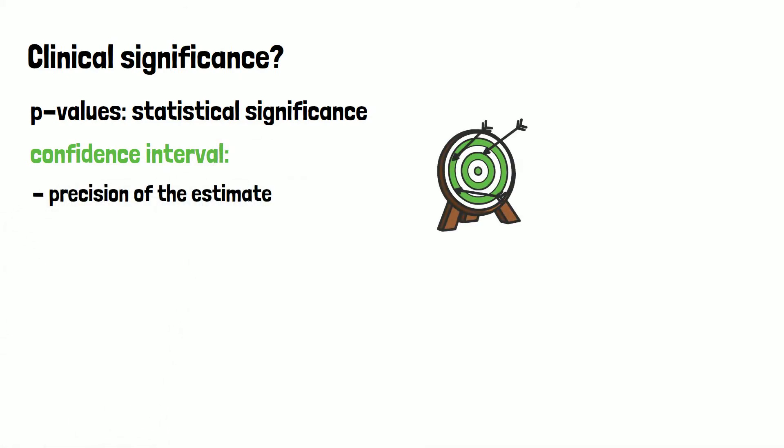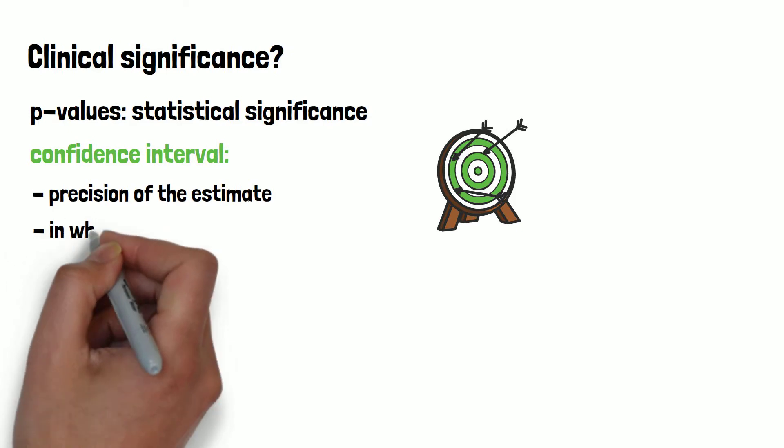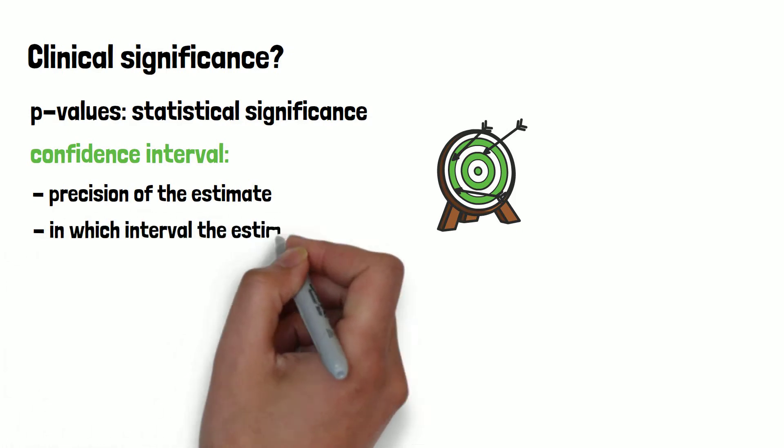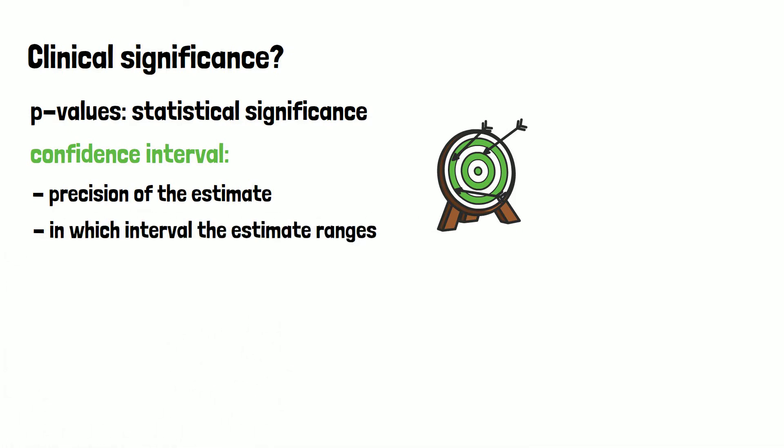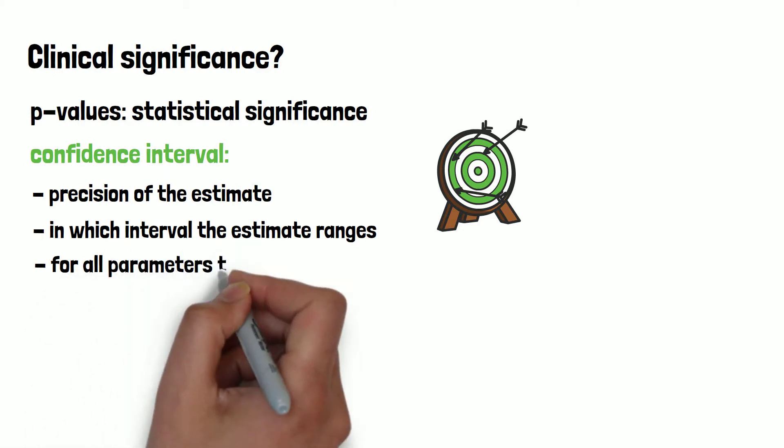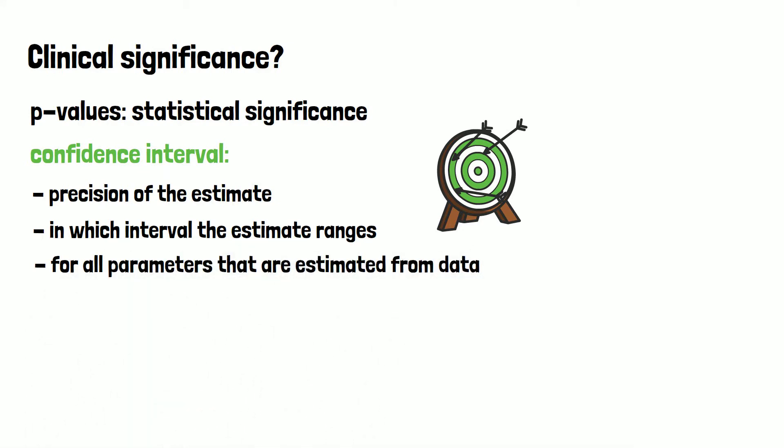It is used to interpret the precision of the estimate. In contrast to statistical tests, confidence intervals also estimate in which interval the estimate ranges. They can be calculated for all parameters that are estimated from data, for example effect sizes, parameters or correlation coefficients.